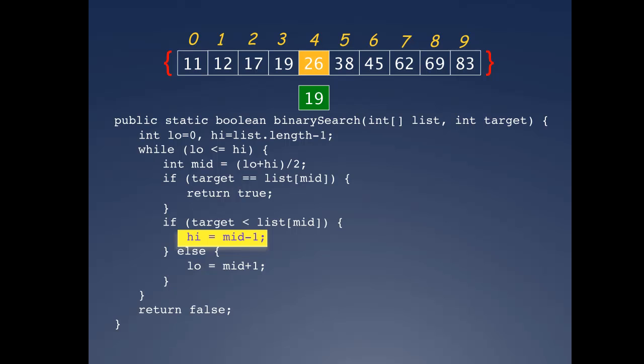Low starts at 0, high at 9, and the midpoint is 4, which is 0 plus 9 divided by 2, which is 4.5, but truncated down to 4 because of the integer division. So the first comparison is at index 4, which holds the value 26.